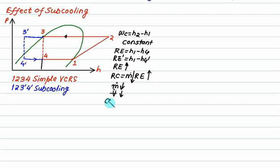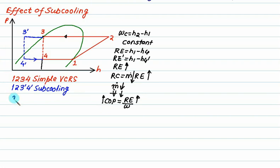The COP is defined as RE divided by W_C. Since RE is increasing and W_C remains constant, the COP also increases. To conclude for sub-cooling: mass flow rate decreases, COP increases, compressor work shows no change.